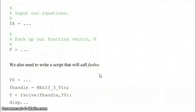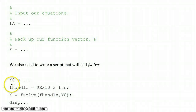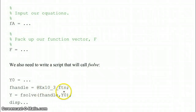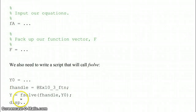In addition to the function we just wrote, we also need to write a script that calls fsolve. In this script, we're going to define our initial guess and tell fsolve what function we want it to look at. The function name is the actual file name saved on our computer without the .m extension, preceded by the @ sign, which tells MATLAB it's a function handle. Then we're going to run fsolve.